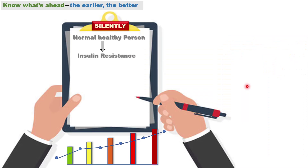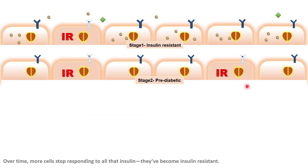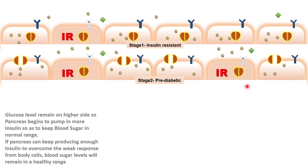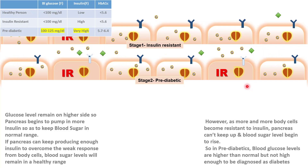If a person doesn't change his lifestyle, he moves on to the next stage — the pre-diabetic stage. In the pre-diabetic stage, over time, more and more cells stop responding to insulin; more cells become insulin resistant. Glucose enters the normal cells but fails to enter the insulin-resistant cells, so the glucose level remains high. The pancreas begins to pump in more insulin to keep the blood sugar in the normal range. However, as more and more body cells become resistant, the pancreas can't keep up and the blood sugar level begins to rise. In pre-diabetes, blood sugar levels are higher than normal but not high enough to be diagnosed as diabetic. However, the insulin levels are very high.